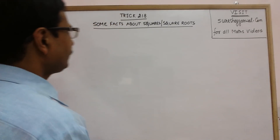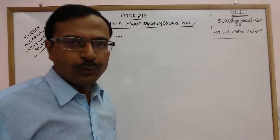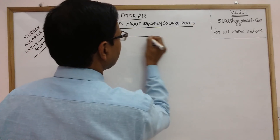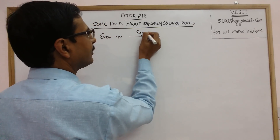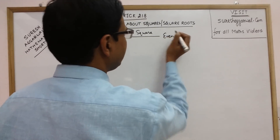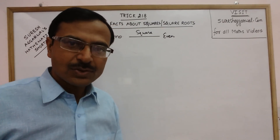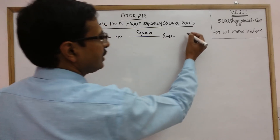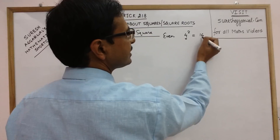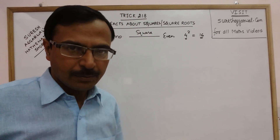Now the first thing: whenever we have an even number like 2, 4, 6, 8, if you take the square of this even number, the answer will always be even. So even numbers have even squares. For example, 4 is even, so 4 squared is 16, which is also even. An even number cannot have an odd square.